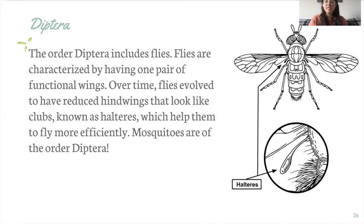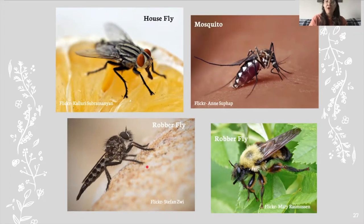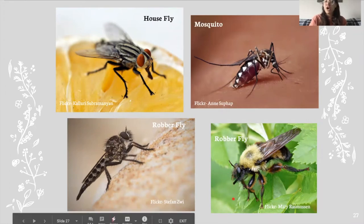Many people don't know this, but mosquitoes are of the order Diptera. Here we have a house fly and a mosquito which you're probably familiar with. On the bottom we've got some really cool flies — these are both robber flies and they look really different. The one on the left is mimicking a dragonfly or damselfly perhaps, and the one on the right is mimicking a bumblebee.